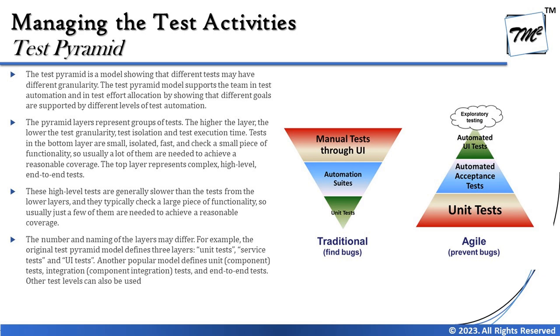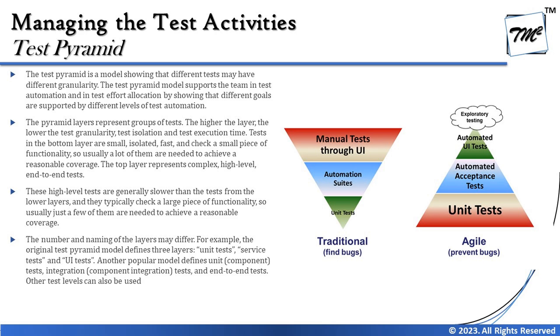The pyramid layers represent groups of tests. The higher the layer, the lower the test granularity, test isolation, and test execution time. Tests at the bottom layer are small, isolated, fast, and check a small piece of functionality — so many of them are needed to achieve reasonable coverage. As covered in Chapter 2, early and frequent feedback saves time, and detecting defects earlier can prevent them from propagating to the next levels.